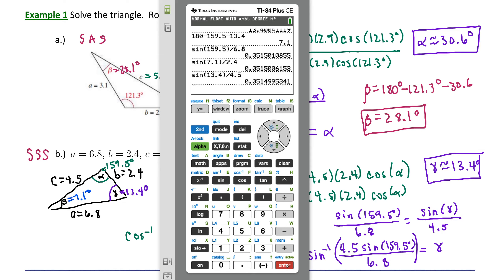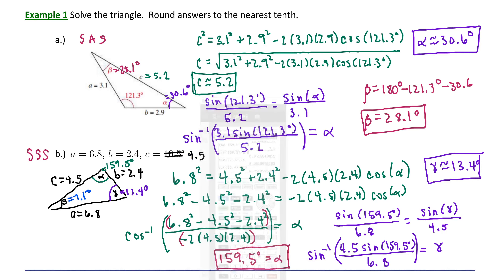The law of cosines is a great starting point for the side-angle-side and the side-side-side cases, but then you can always resort to the more efficient and easy-to-use law of sines to finish solving the triangle.